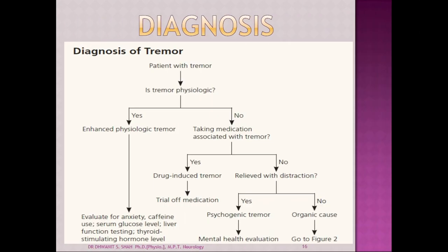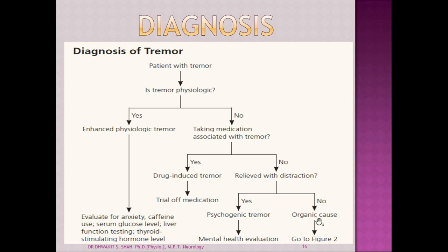The next very important part is diagnosis. When a patient comes with tremor, first check: is the tremor physiologic? If yes, evaluate for anxiety, caffeine use, serum glucose level, liver function tests, or thyroid stimulating hormone level. If the tremor is not physiologic, check whether the patient is taking any medication associated with tremor. If yes, it is a drug-induced tremor — try stopping the medications. If no medication association, check whether it is relieved with distraction. If not relieved, think about an organic cause.